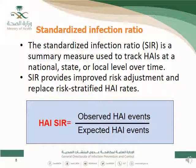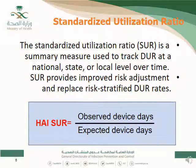SIR is calculated by dividing observed over expected HAI events. The standardized utilization ratio works the same way, but rather than observed and expected infection events, it uses observed device days over expected device days. So for SIR the numerator and denominator are HAI events; for the utilization ratio, they are device days — giving you a summary measure of your utilization compared to the standard population.